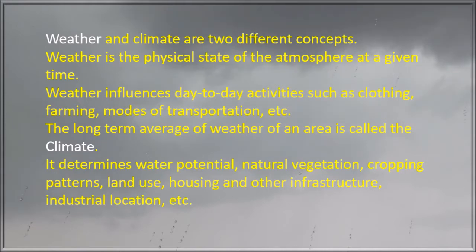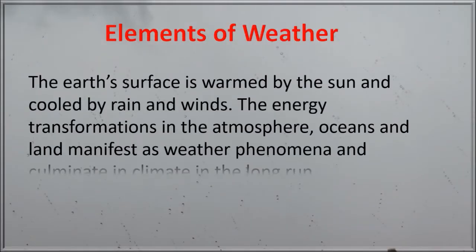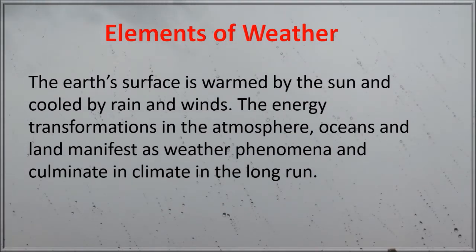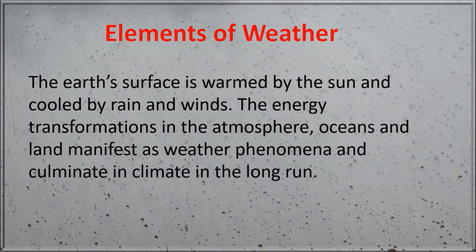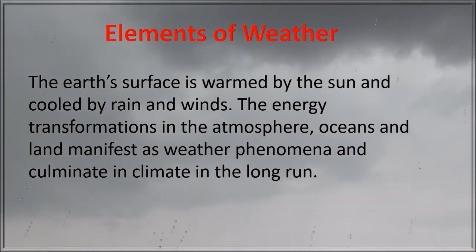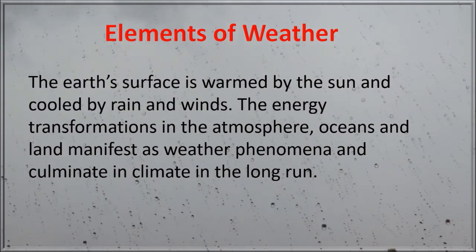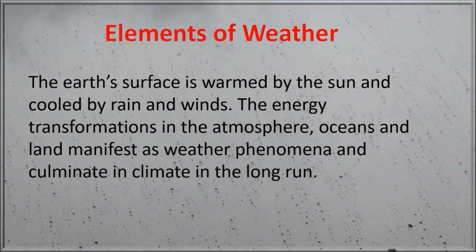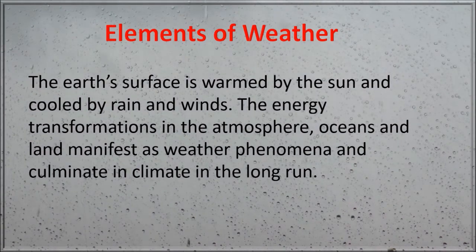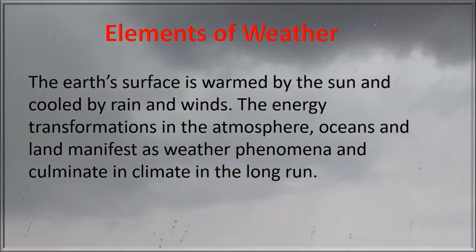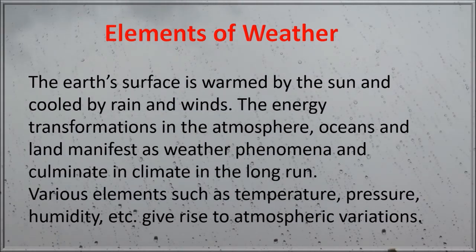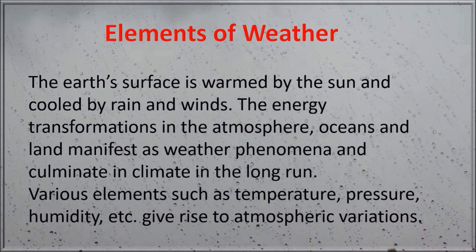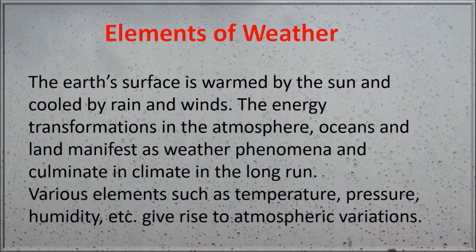Now let's learn about the elements of weather. The earth's surface is warmed by the sun and cooled by rain and winds. The energy transformations in the atmosphere, oceans and land manifest as weather phenomena and culminate in climate in the long run. Various elements such as temperature, pressure, humidity, etc., give rise to atmospheric variations.